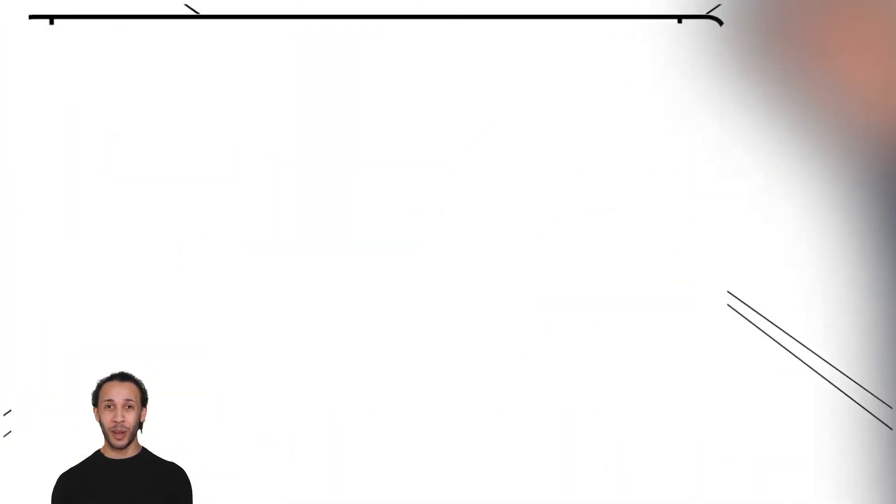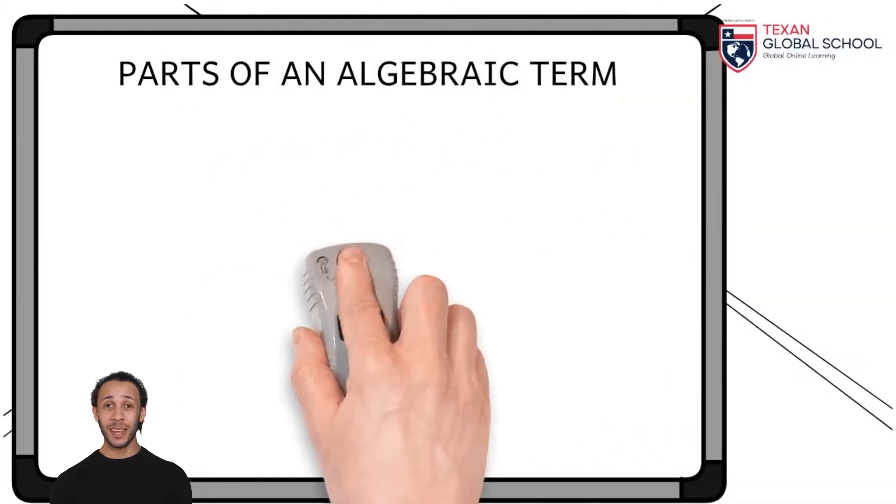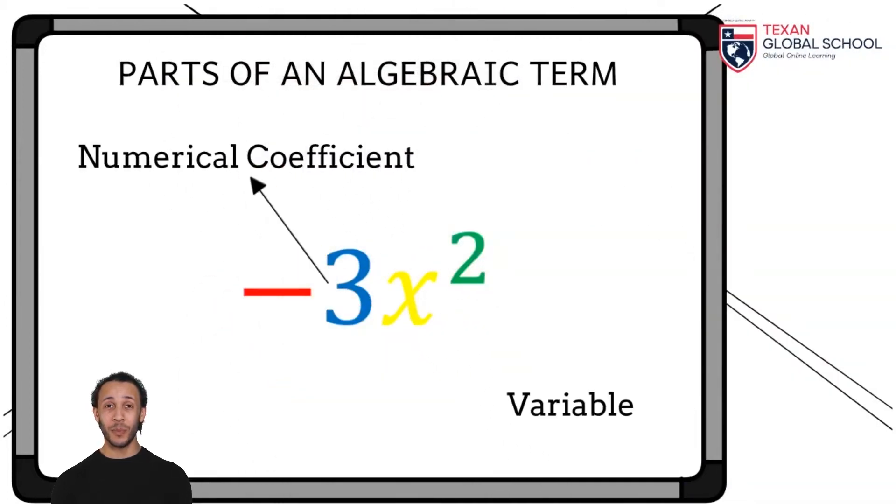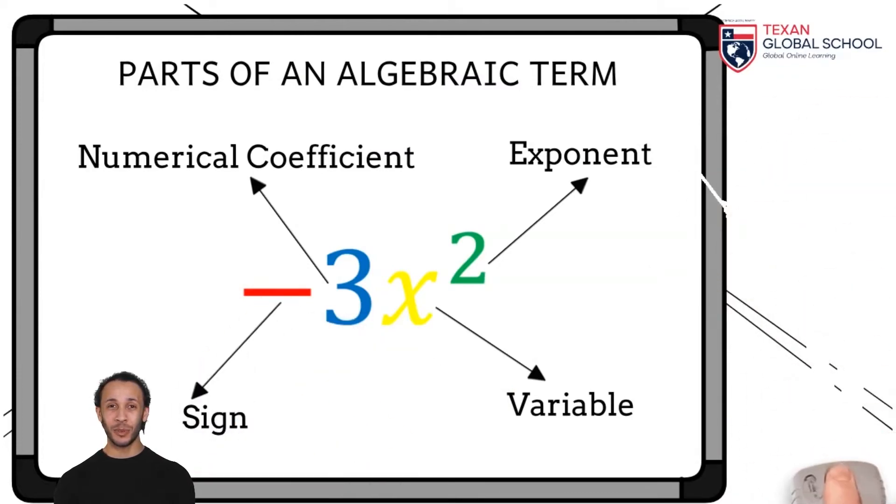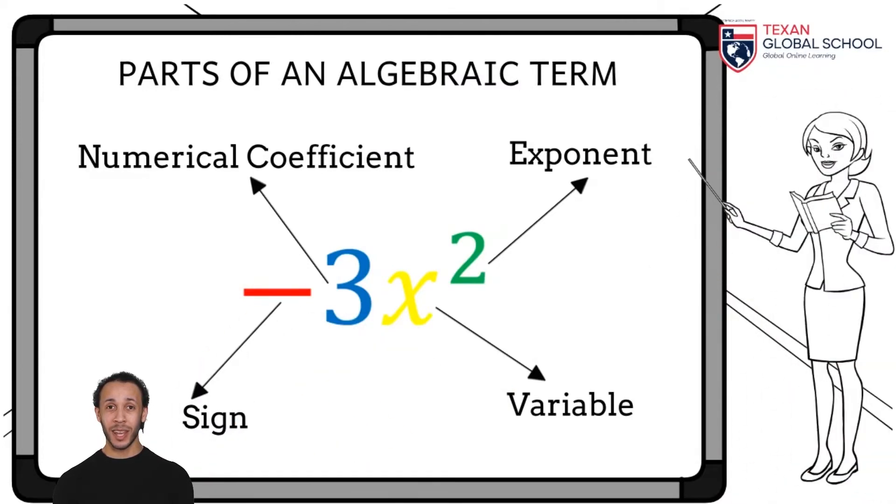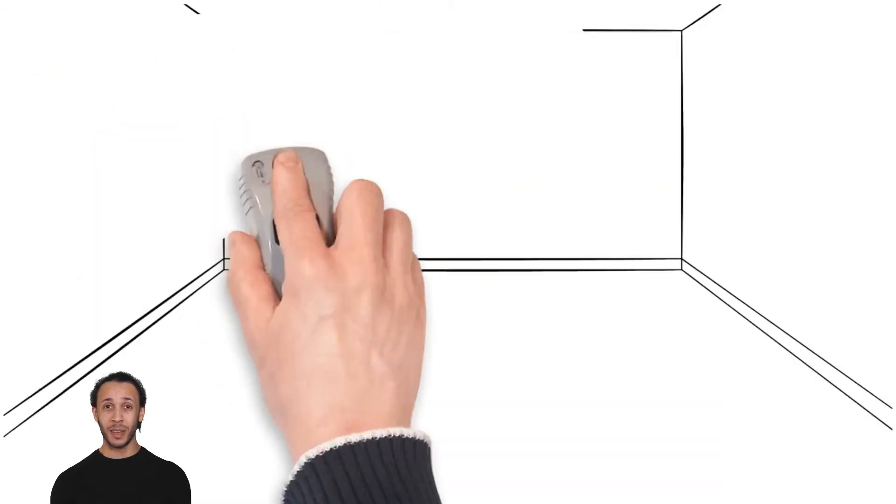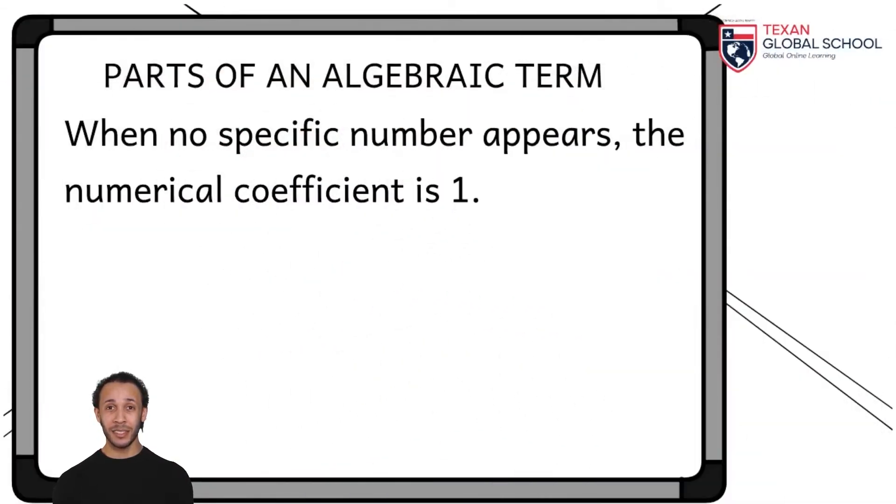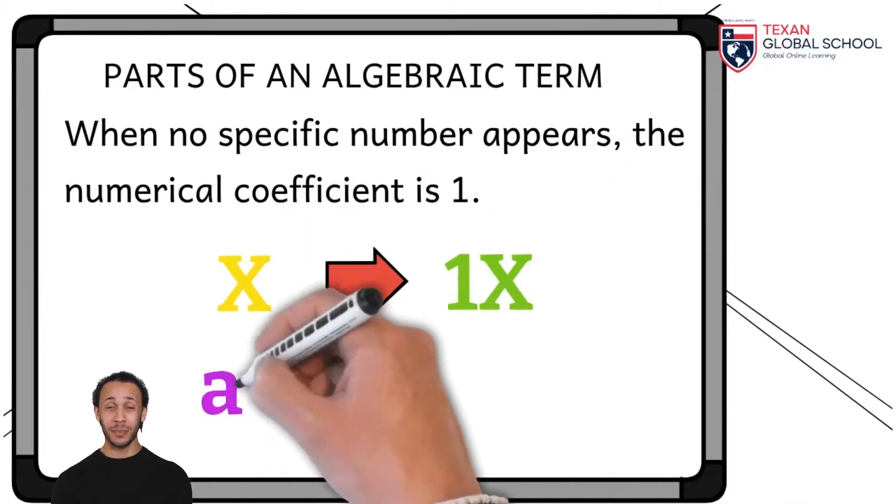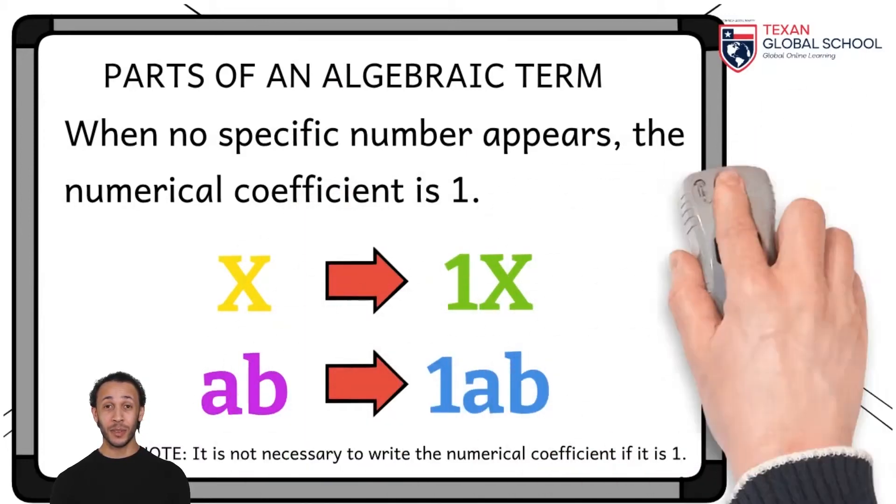We now highlight the following parts of the algebraic term: the sign of the algebraic term, one or more variables, and the corresponding exponents. It is crucial to respect the algebraic language at all times. Remember that when no specific number appears, the numerical coefficient is 1. x, for example, or the product ab, both have a numerical coefficient of 1.